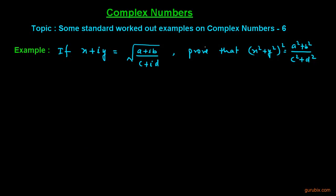Welcome friends, let us solve another interesting example on complex numbers. The example is as follows: if x plus iota y is equal to the square root of (a plus iota b) over (c plus iota d), then prove that the square of (x squared plus y squared) is equal to (a squared plus b squared) over (c squared plus d squared).